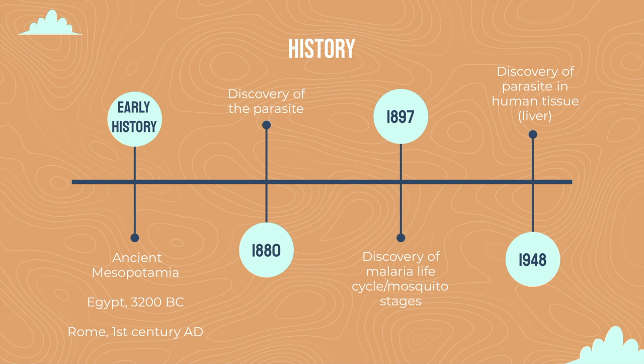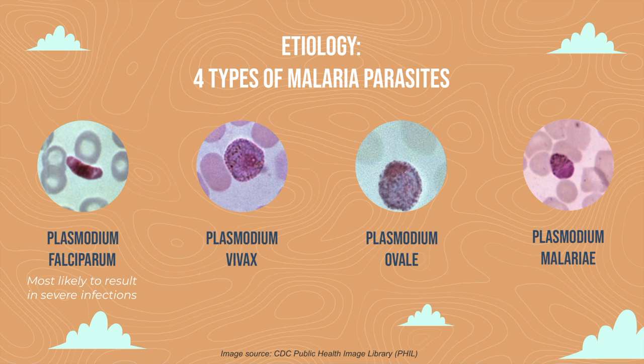In 1880, a French army doctor by the name of Charles-Louis Alphonse Laveran discovered the single-celled protozoan that caused malaria. In 1897, Surgeon Major Ronald Ross discovered the mosquito stages of malaria. And in 1948, the third piece of the human malaria puzzle was solved, as a sanctuary for human malaria outside of blood cells was found to be in the liver.